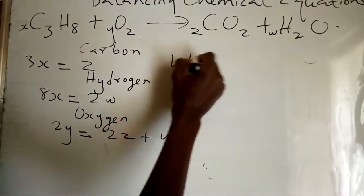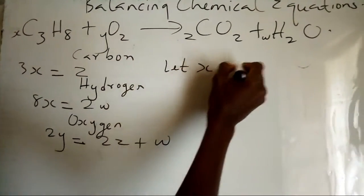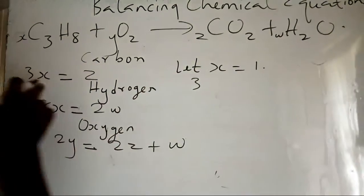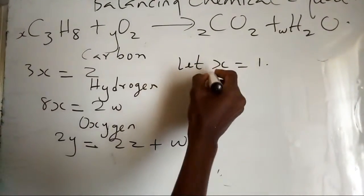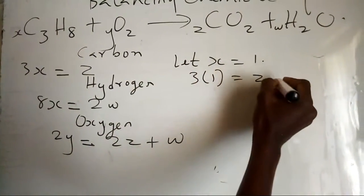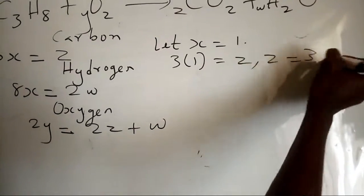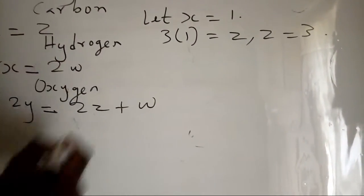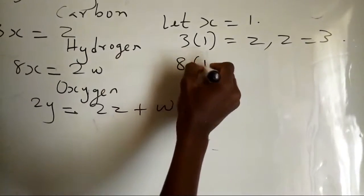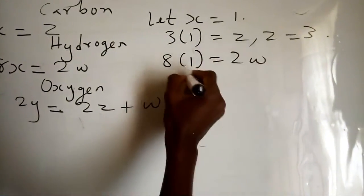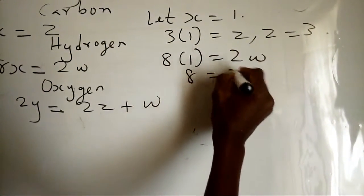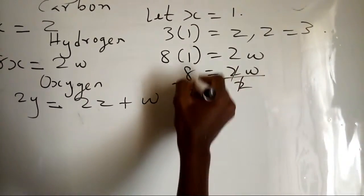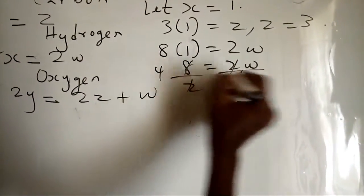Let x equal to one. If x is equal to one, then 3x equals 3, so z is equal to three. For hydrogen: 8 times 1 equals 2w, so 8 equals 2w. Divide both sides by two, so w is equal to four.